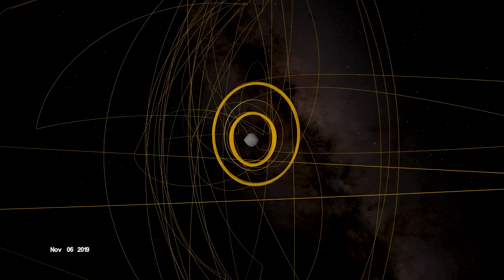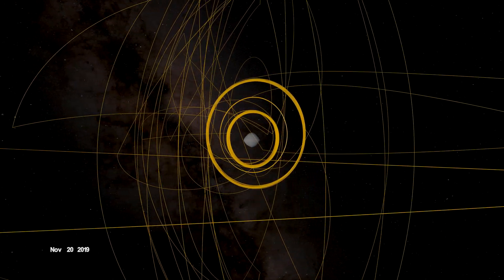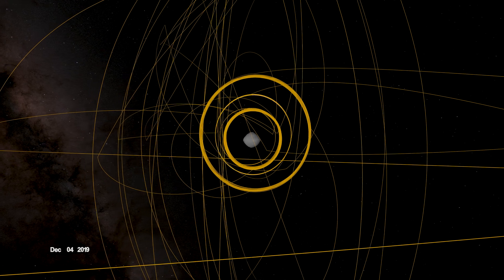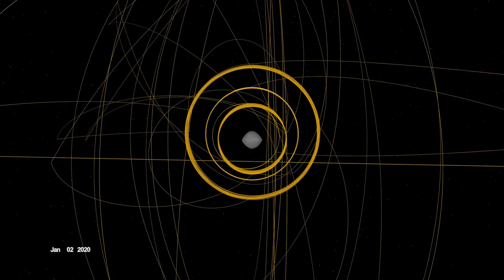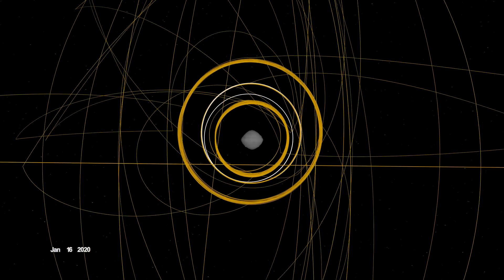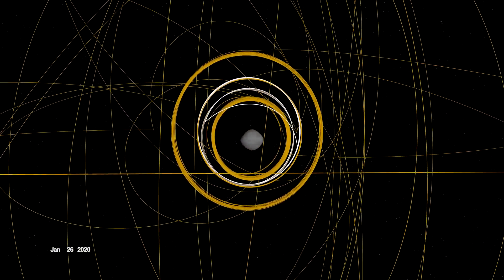OSIRIS-REx concluded its first year at Bennu back in orbit, circling the asteroid's terminator, or boundary, between day and night. Here, outside forces acting on the spacecraft are balanced, allowing it to orbit within the same plane over time.